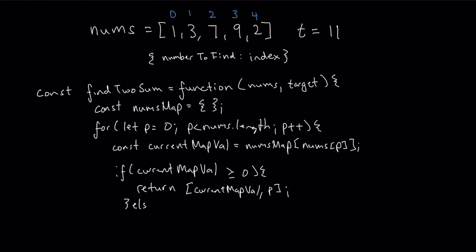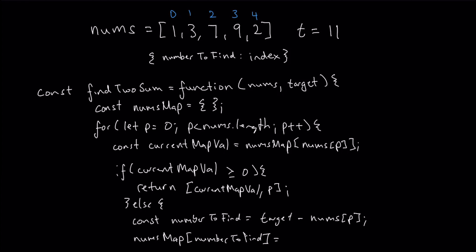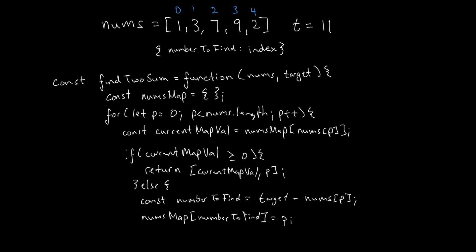If that doesn't happen, then in our else statement we are going to do the second task, which is to generate the number to find and then store it in our nums map. So here I'm going to say const number to find equals the target minus nums at p. So it's the exact same formula we had last time. Once I have this, I need to make sure to store this in the nums map. So I'm going to say nums map at this number to find, which is the key, is equal to a value of p, which is the index that created this number to find.